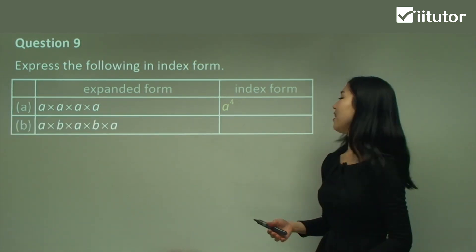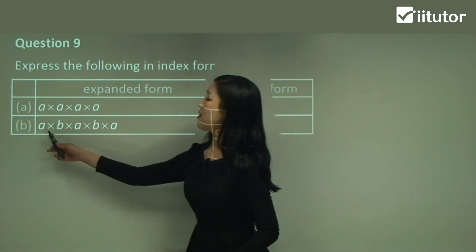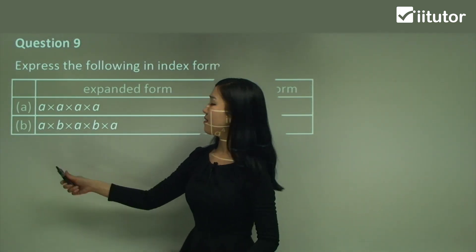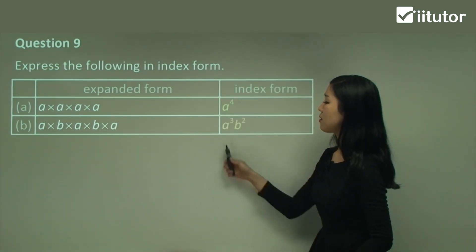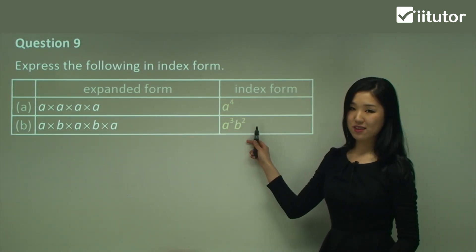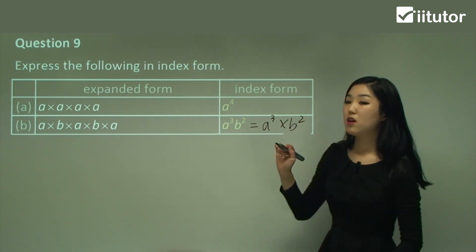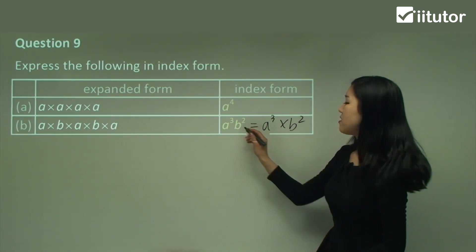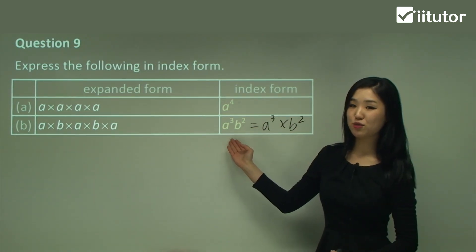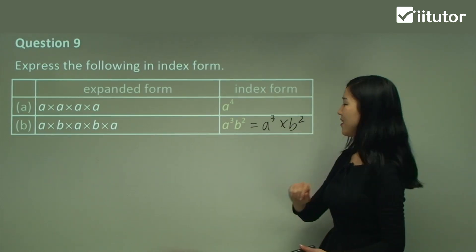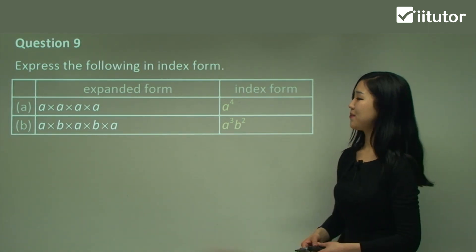For part b, it's a little bit different because we've got different pronumerals. Make sure you gather the like terms together. There's 'a' and 'b': how many a's? There are 1, 2, 3 a's. And b — there are 1, 2 b's. So it's going to be a cubed times b squared. You don't really need the multiplication sign there, because if there's nothing in between it simply means multiply. So it's probably simpler to write it as a³b².